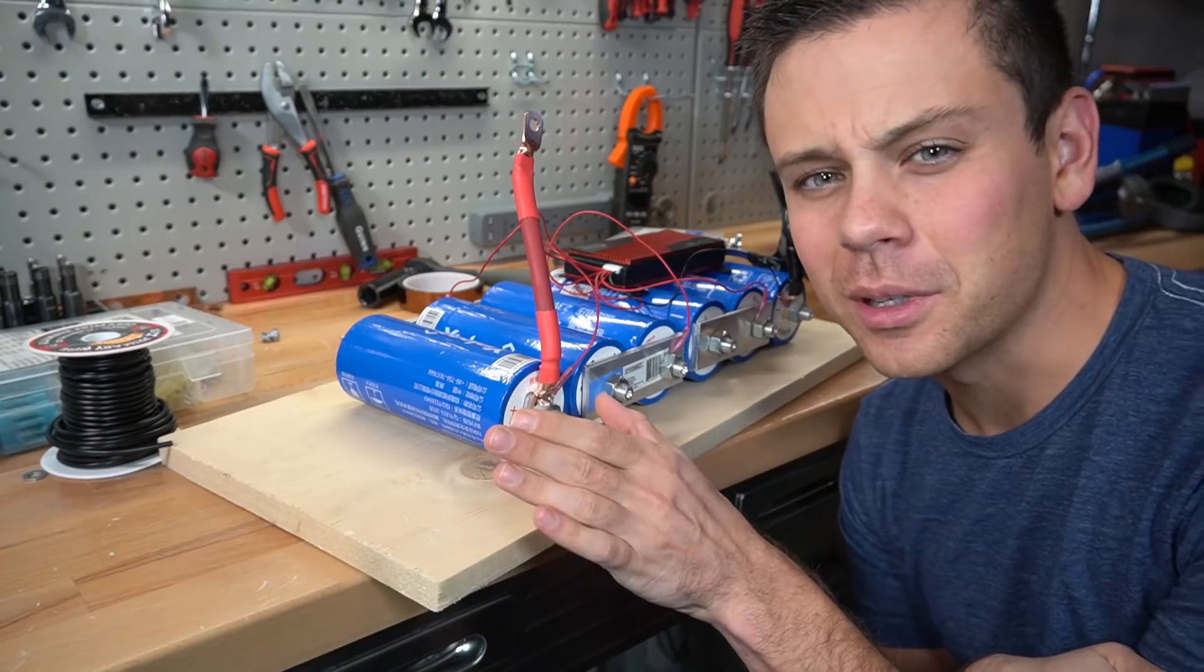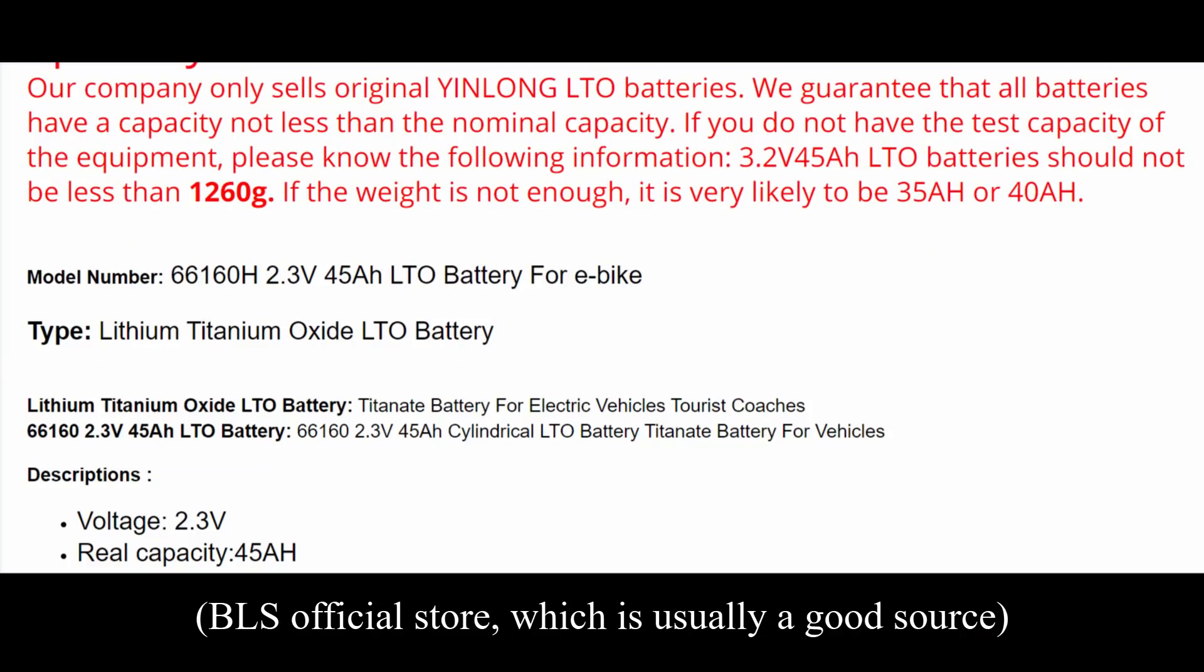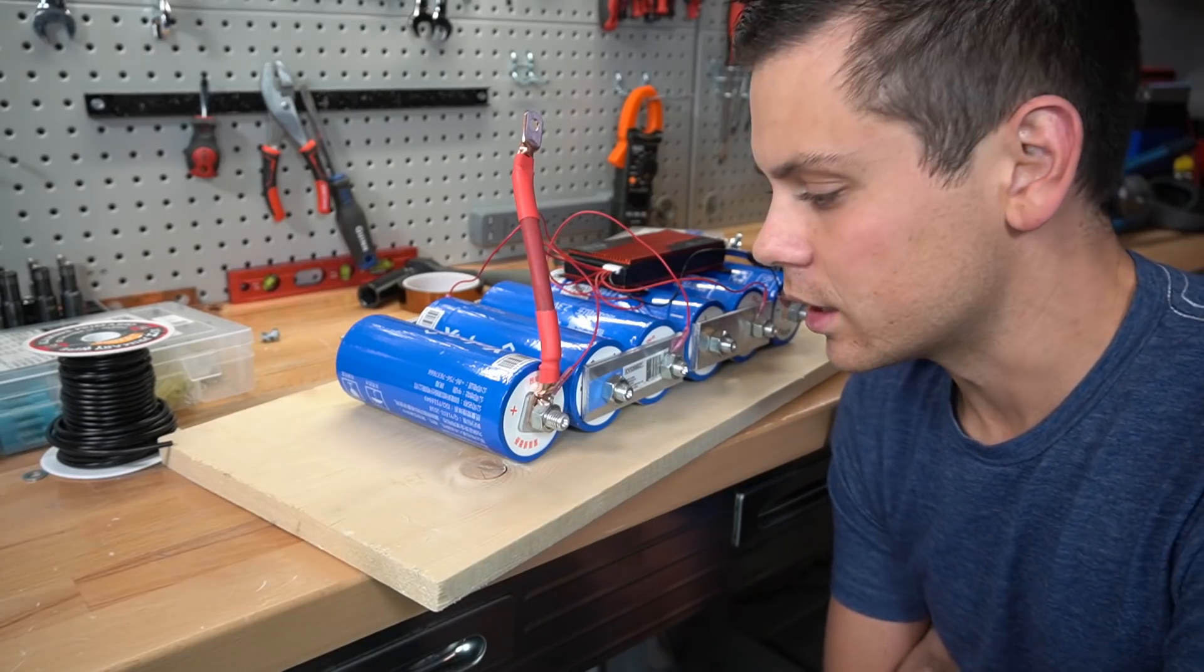If these turn out to be grade B cells, I'm going to be pretty disappointed because they look really nice and the listing specifically stated grade A new cells. So we're going to charge this up and test it again.